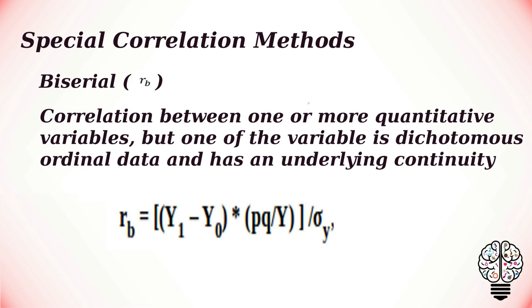The formula to calculate biserial correlation coefficient is as follows: where Y₀ is the mean score for data pairs for X equal to 0, and Y₁ is the mean score for data pairs for X equal to 1. Q is the proportion of data pairs for X equal to 0, P is the proportion of data pairs for X equal to 1, and σY is the population standard deviation.